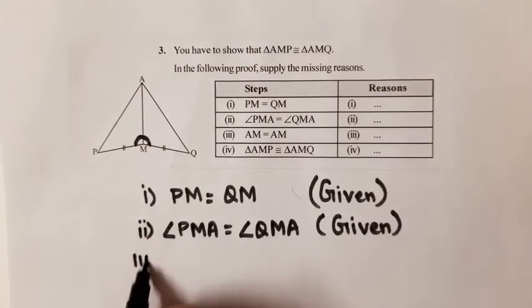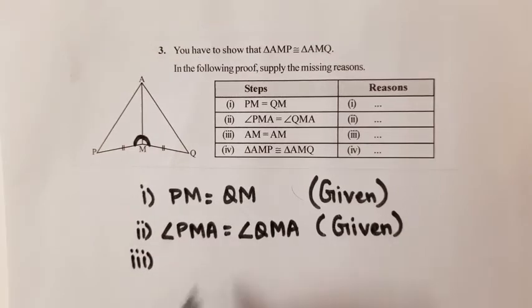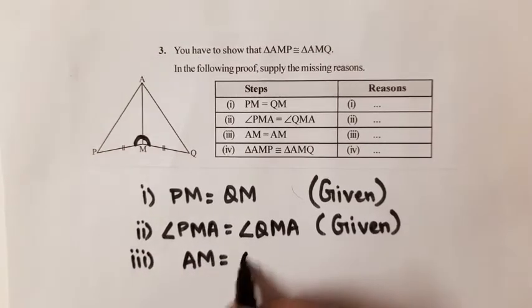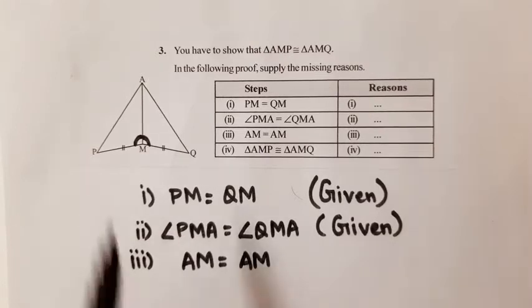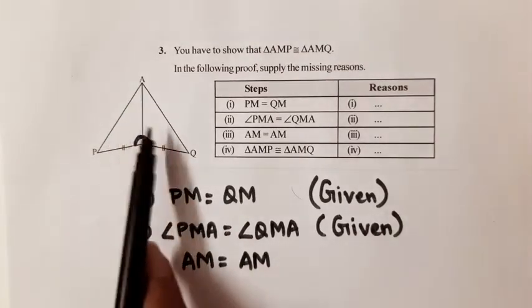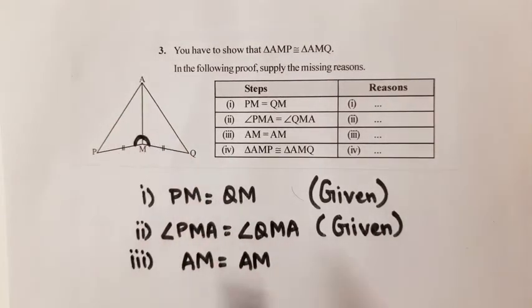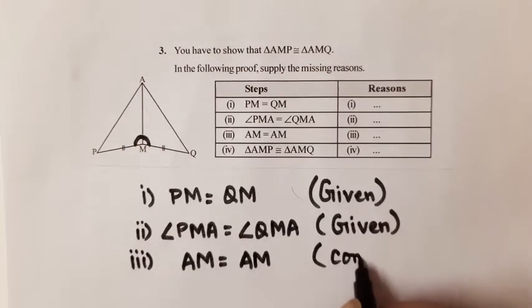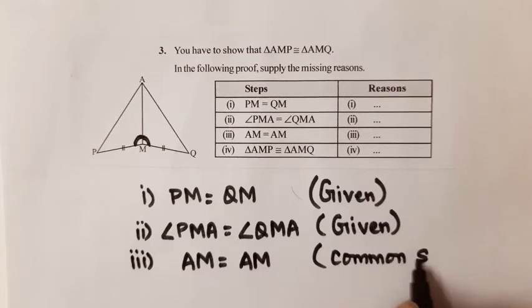Third part: AM equal to AM. If we look at the figure, this side AM is common to both the triangles. So the reason here will be: common side.